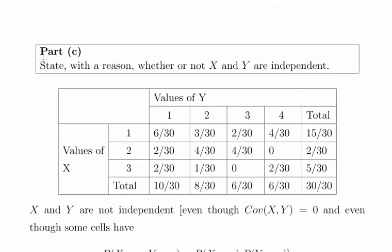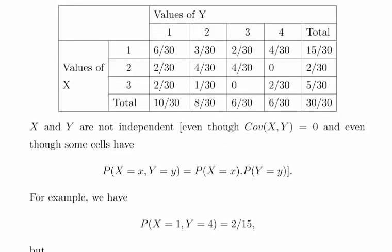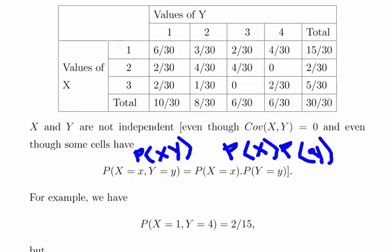State with a reason whether or not x and y are independent. Now usually one of the key tells is to see if the covariance of x and y is equal to 0, which is a positive sign if you want your variables to be independent — but it's not enough. So x and y are not independent even though the covariance is equal to 0. It's very important to note the difference here: P(x, y) is the joint probability, while P(x) times P(y) is the product of two different marginal probabilities. This has to work in each possible case.